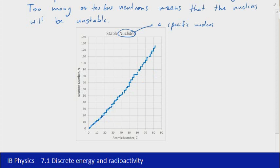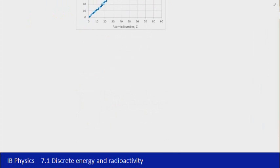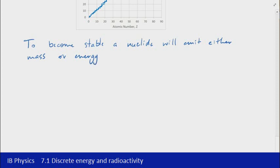So that's something that we'll start to look at in terms of what's going to happen when they're not stable. And so to become stable, a nuclide will either emit either mass or energy, in some cases both mass and energy. And in the next video, we'll actually have a look at what different types of radioactive decay there are, based on this idea of emitting matter, mass or energy.